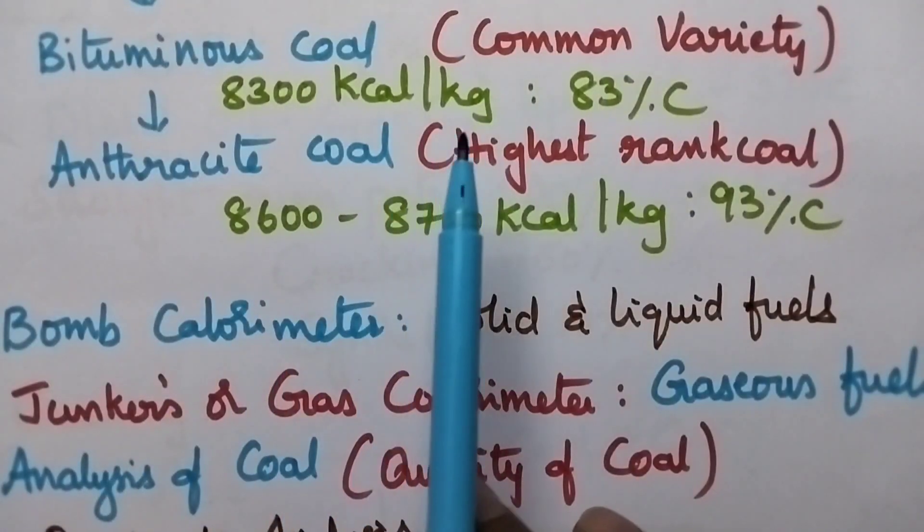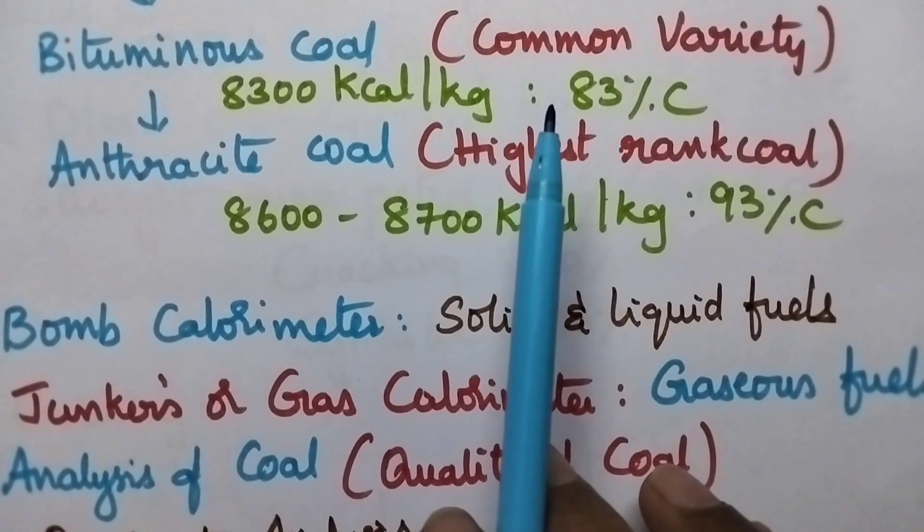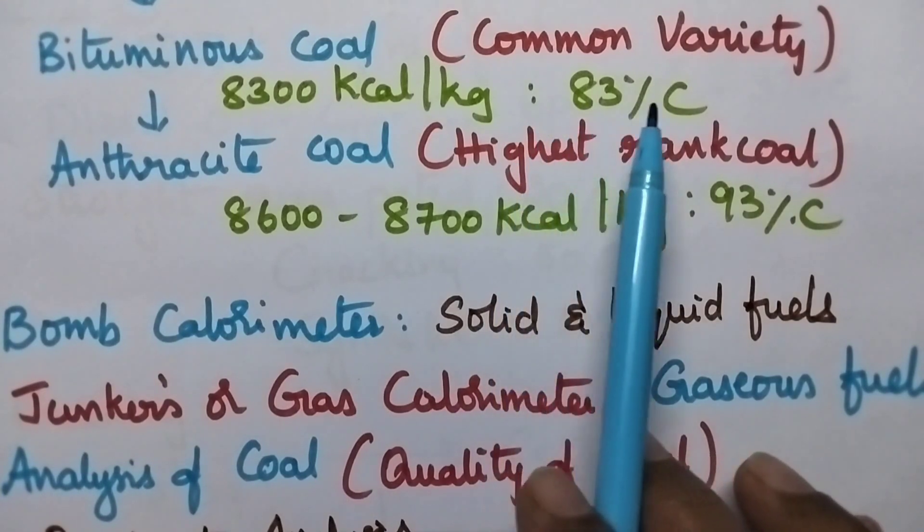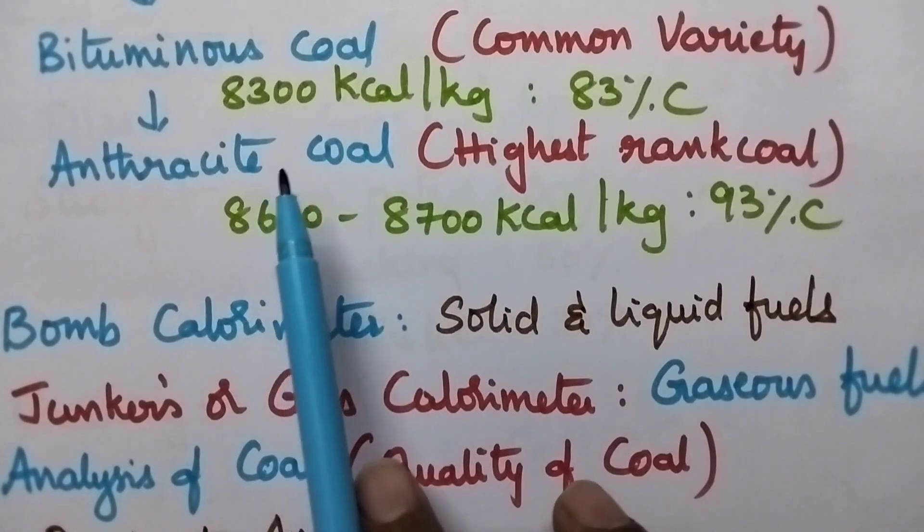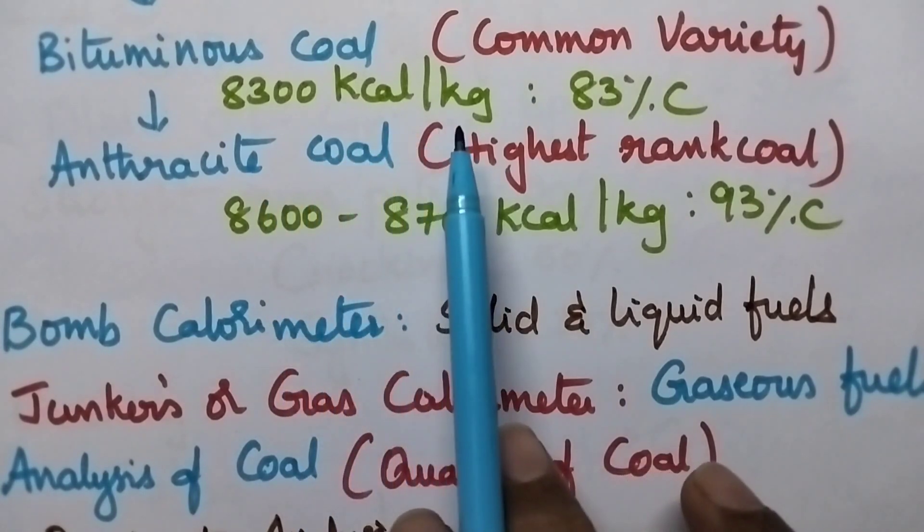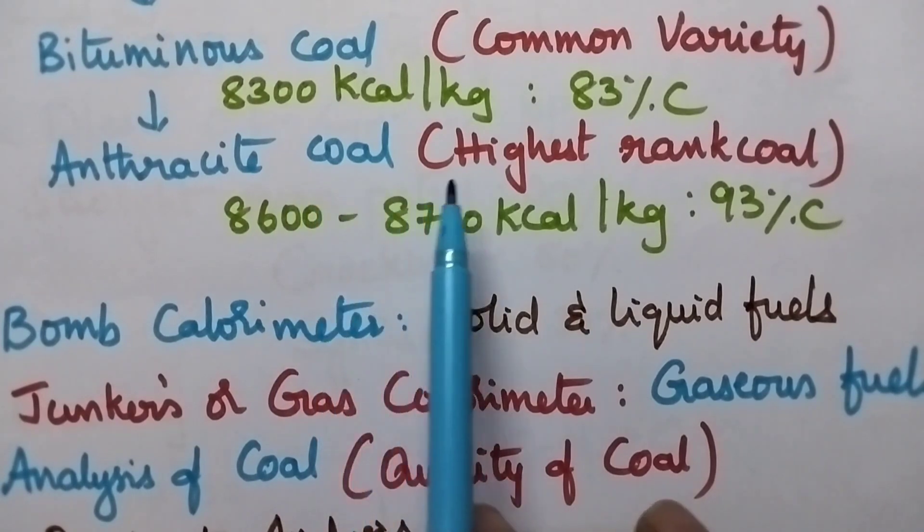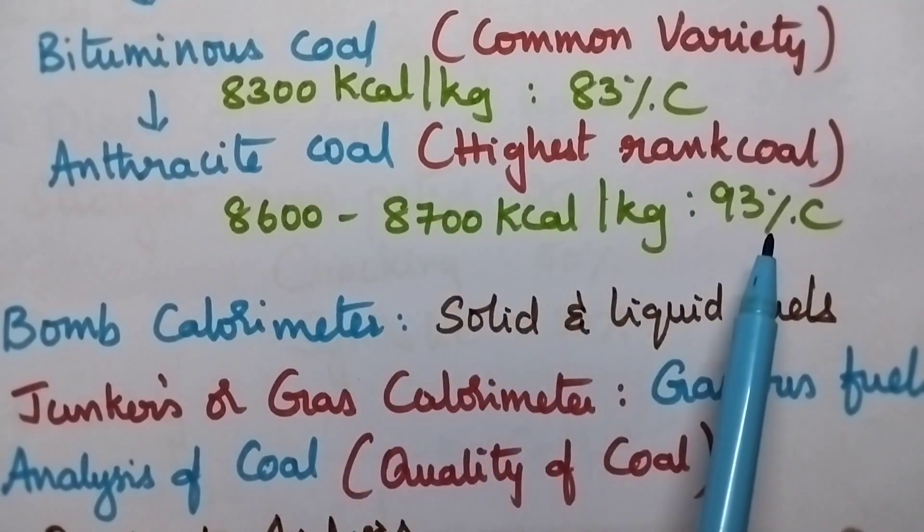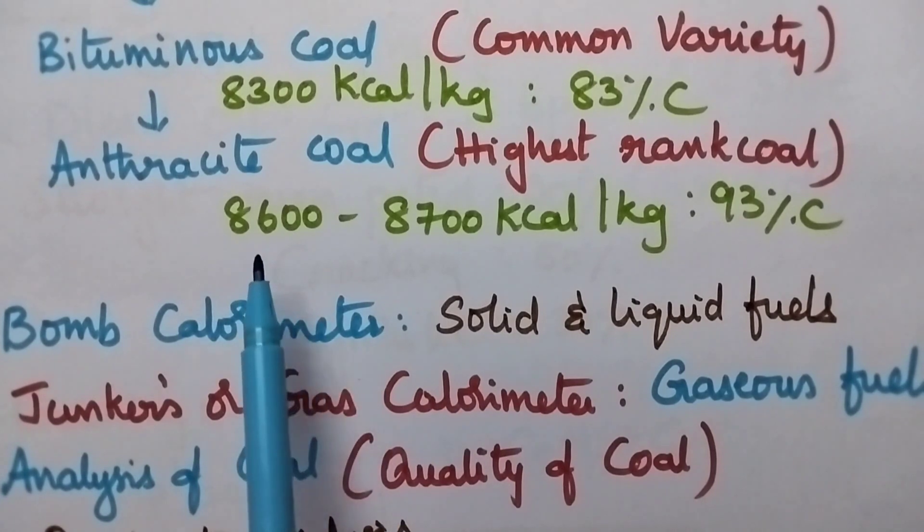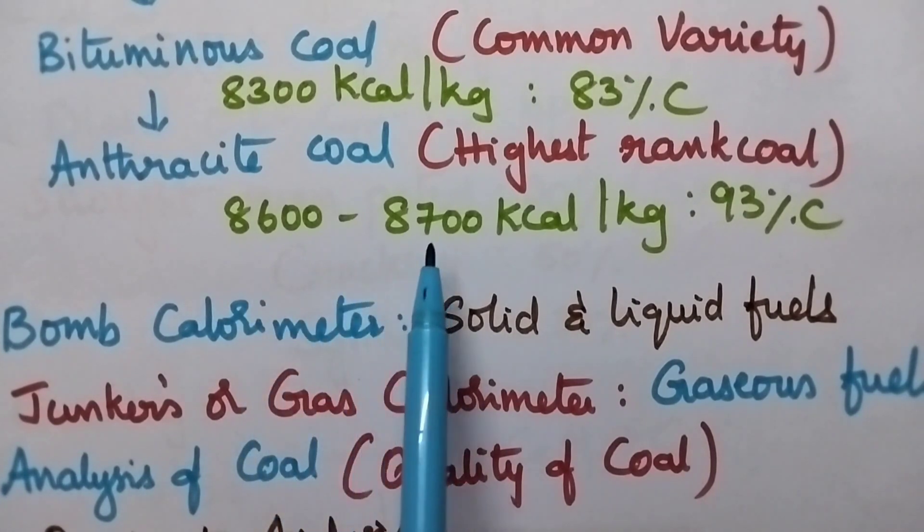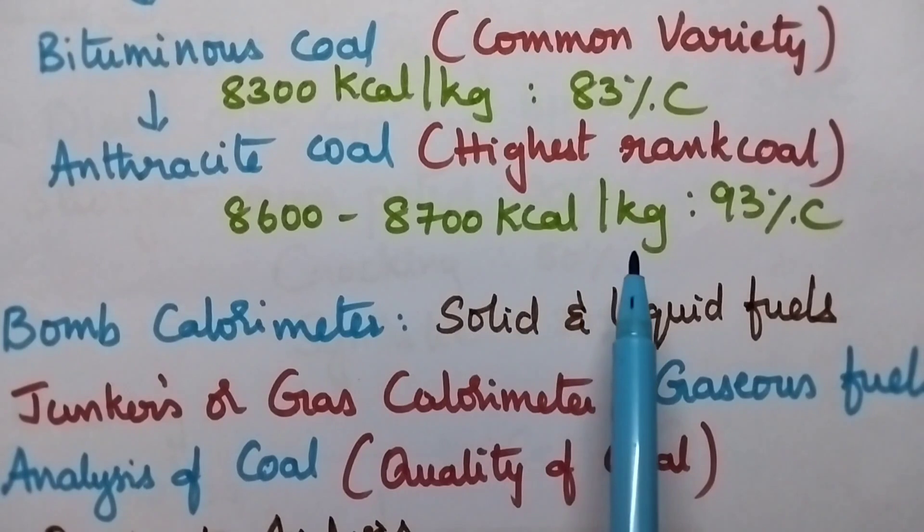Bituminous coal is the most widely used coal variety. It consists of 83% of carbon. Hence its calorific value is 8300 kcal per kg. Whereas anthracite is the highest rank coal which contains 93% of carbon. Hence its calorific value is 8600 to 8700 kcal per kg.